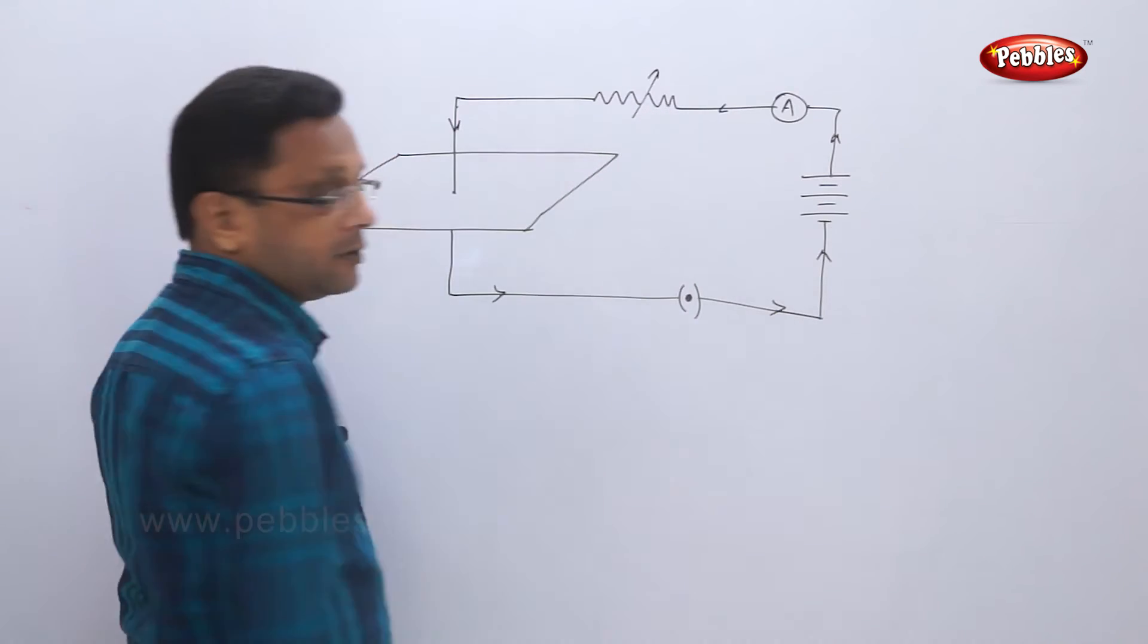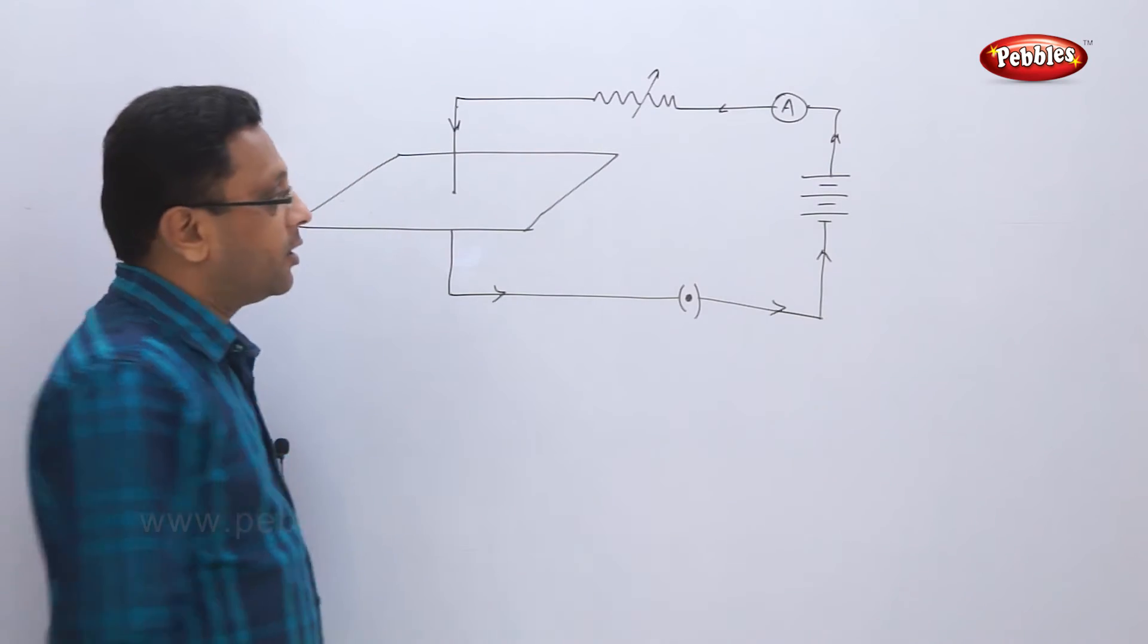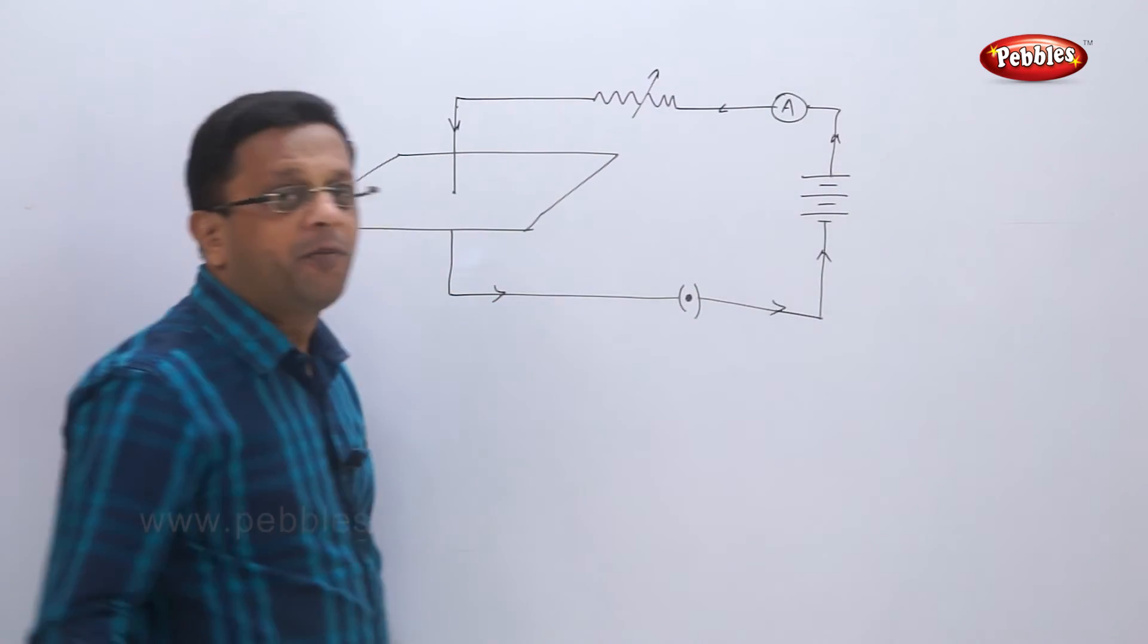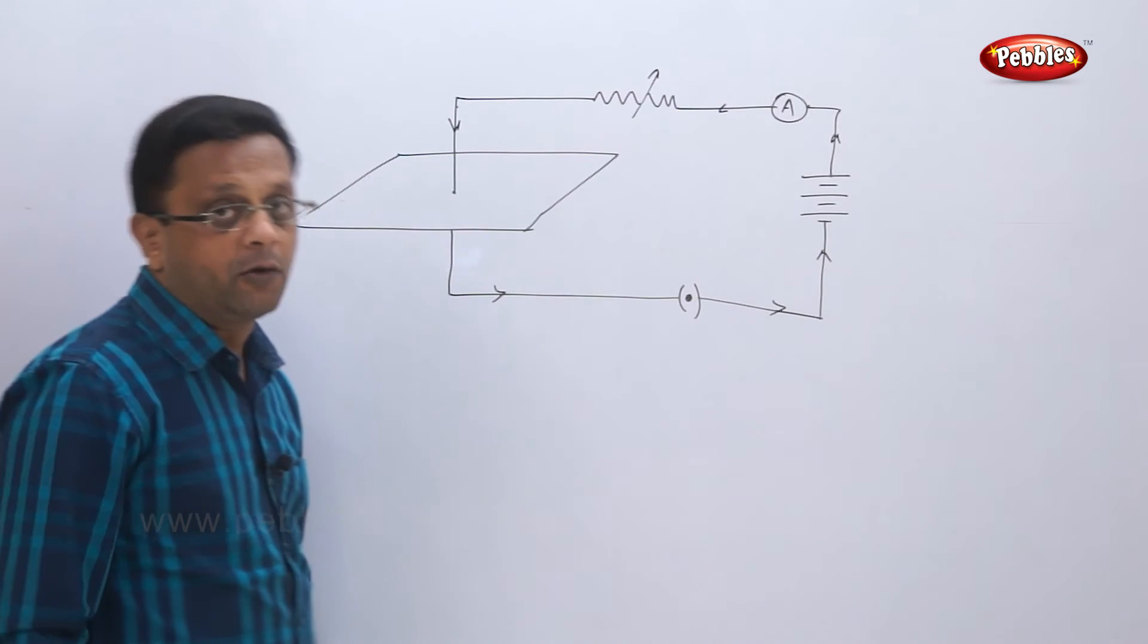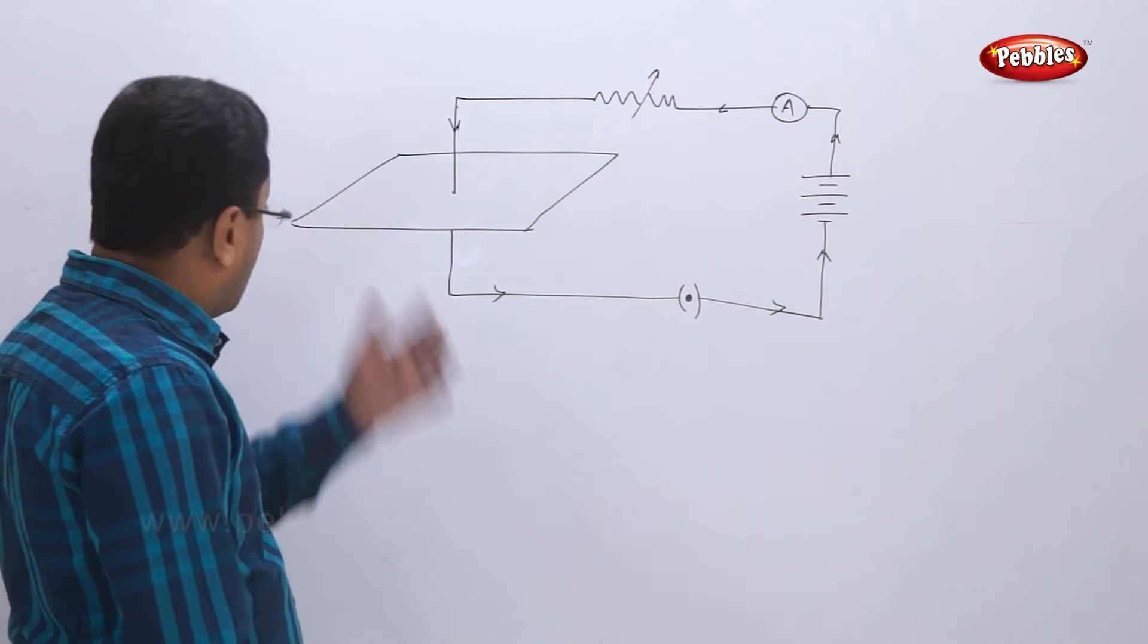One thick copper wire is passed through the center of this cardboard. Then one rheostat is kept, that means the variable resistance is there. Ammeter is there to check the electric current. One battery supply is there. And one key to close and open the circuit.